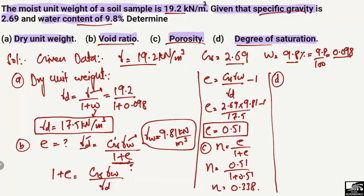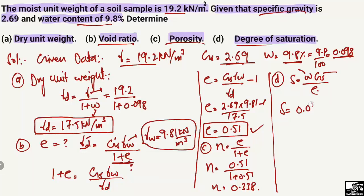The last unknown is the degree of saturation. The formula is: S equals w times Gs divided by e. The water content is 0.098, Gs is 2.69, and e is 0.51. So S equals 0.098 multiplied by 2.69 divided by 0.51, multiplied by 100 percent. The degree of saturation comes out to be 51.7 percent.